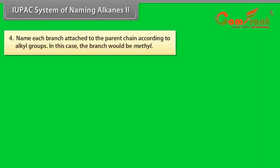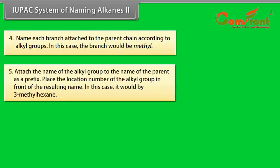IUPAC rules for naming alkanes, continued: 4. Name each branch attached to the parent chain according to alkyl groups. In this case, the branch would be methyl. 5. Attach the name of the alkyl group to the name of the parent as a prefix. Place the location number of the alkyl group in front of the resulting name. In this case, it would be 3-methylhexane.